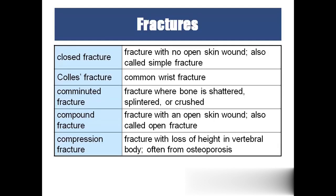Moving to fractures — there are different types. First is closed fracture: there is no open skin wound, it is a simple fracture, no bleeding visible. Colles fracture is the common wrist fracture. Comminuted fracture means the bone is scattered and crushed. If the crushing is too severe, they may go for amputation or fix it with pins and screws.